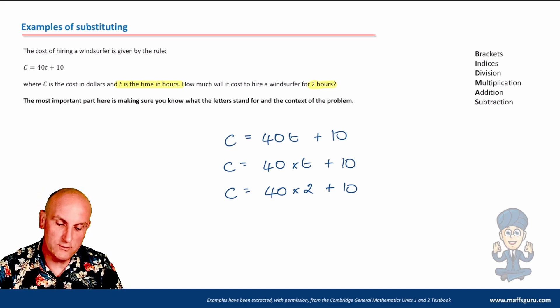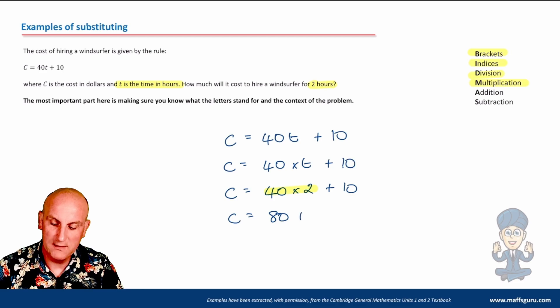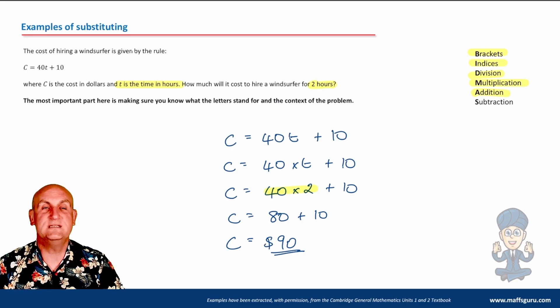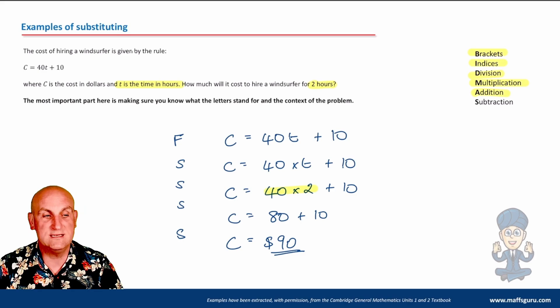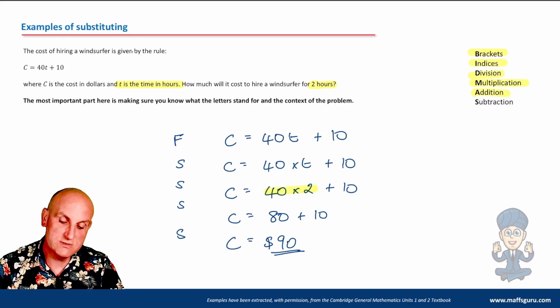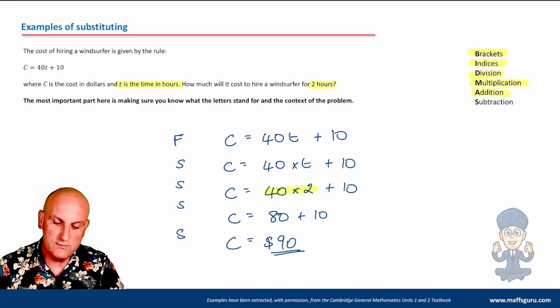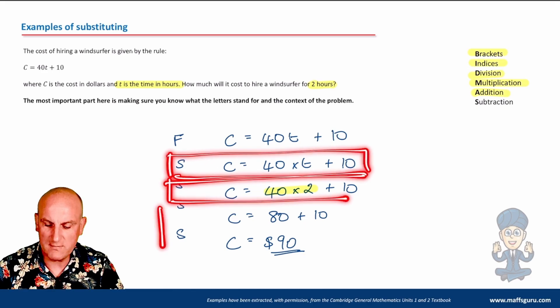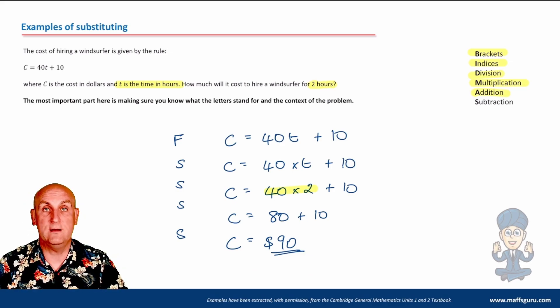So if I wrote down my formula 40T plus 10, hopefully everyone out there knows that that is 40 times T. So I would do 40 times T plus 10. Well, they've given me the value of T. They told me where I see the value of T, change it for a two. So I'm going to substitute. Everything else stays the same. The T becomes two. And now it comes down to BIDMAS. Do I have any multiplication? I should cocoa. And I'm going to do that first. So C is equal to 40 times 2 is 80 plus the 10. So C in that situation would be 90, and therefore we would probably say $90 because it's dealing with cost.